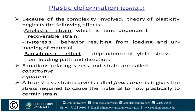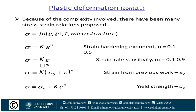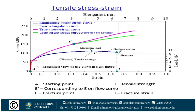Due to the complexity involved, the theory of plasticity neglects the following effects: inelastic strain and hysteresis strain (which are time-dependent), hysteresis behavior from loading and unloading, the Bauschinger effect, and dependence of yield stress on the loading path and direction. The stress-strain relations include: sigma equals K × epsilon^n (where the hardening exponent n equals 0.1 to 0.5); sigma equals K × epsilon^m (where strain rate sensitivity m equals 0.4 to 0.5); and sigma equals sigma₀ + K × epsilon^n, where sigma₀ is the yield strength.